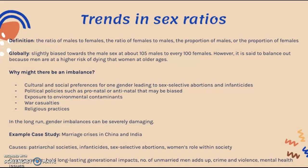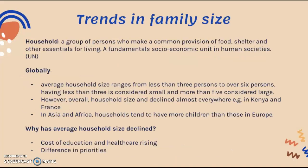An example case study is the marriage crisis in India and China. The causes include patriarchal societies, infanticide, sex-selective abortions, and a lack of power in women's roles within society, leading to skewed societal norms about gender equality. Consequences include long-lasting generational impacts: the number of unmarried men adds up to a very large number, leading to possible increases in crime, violence, and mental health issues for men who cannot find marriage.